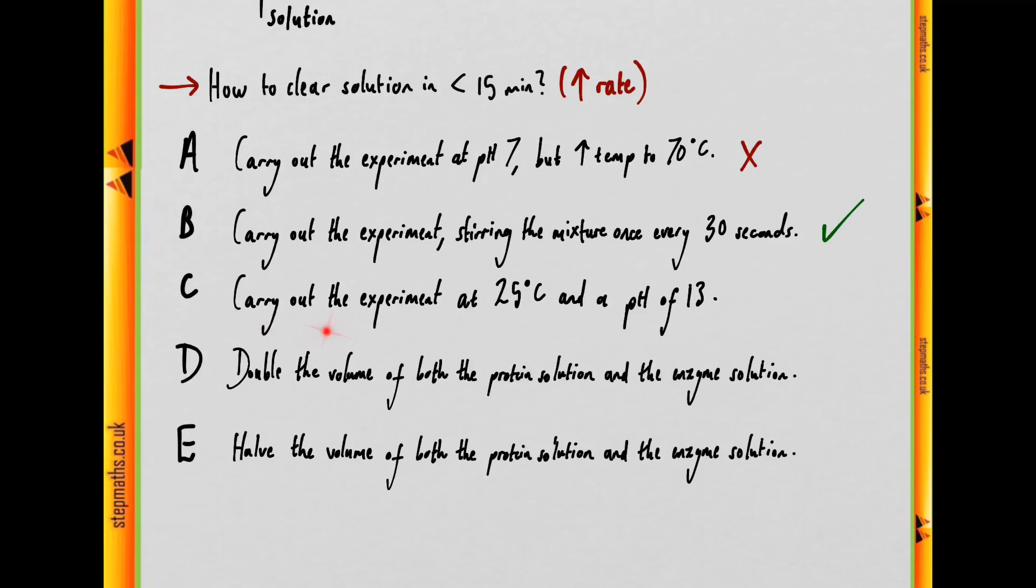Option C, carry out the experiment at 25 degrees at a pH of 13. Well, again, like this temperature increase, increasing the pH, we have no evidence to suggest that this would be a more effective pH in which the enzyme would work.